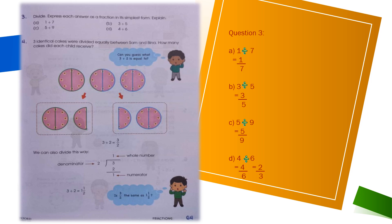But in part D we have a different case, because we have 4 divided by 6. Here 4 comes in the numerator and 6 comes in the denominator, and these both numbers are divisible by 2. So we further reduce this fraction to its simplest form and represent it as 2 over 3, which is our final answer.